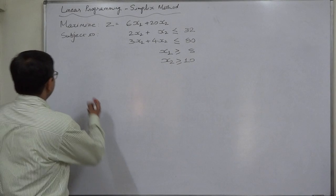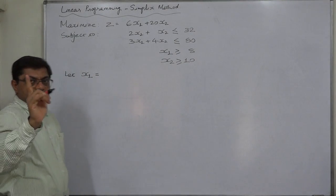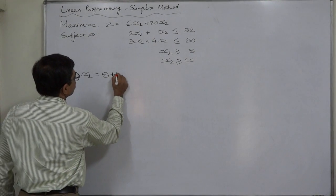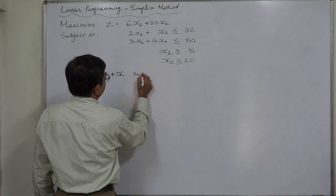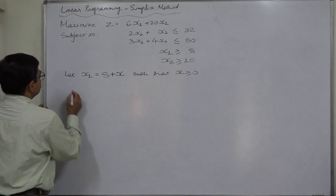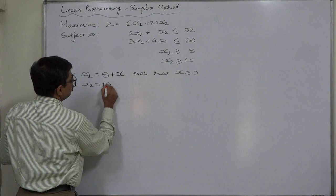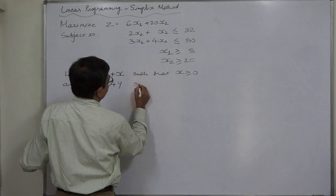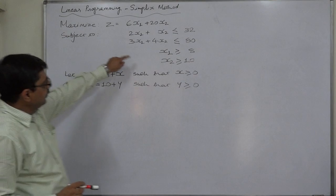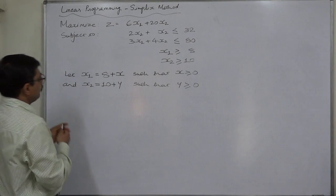The technique is: let x₁ = 8 + x, where x is non-negative, and x₂ = 10 + y, where y is non-negative. Now, in the entire problem — including the objective function and all the constraints — we substitute these two expressions for x₁ and x₂.